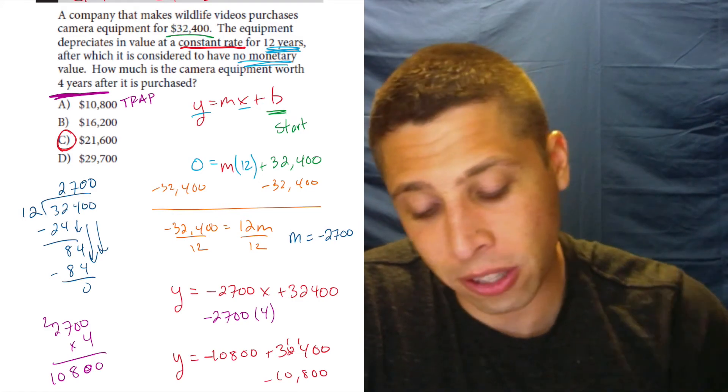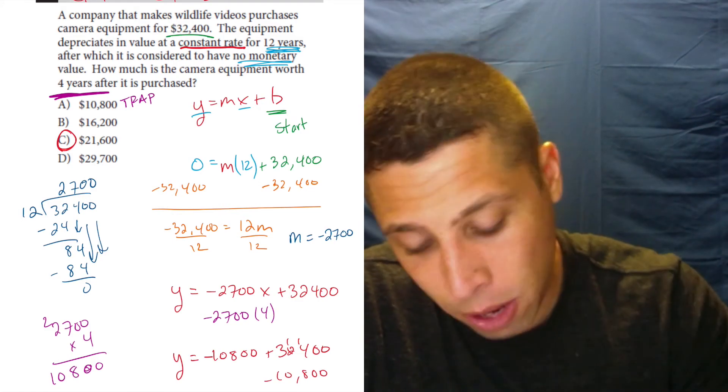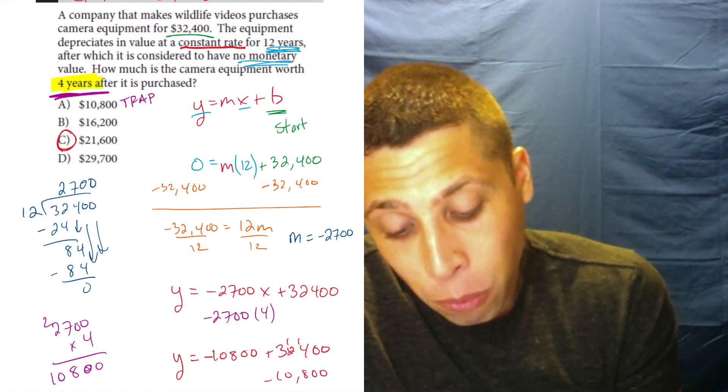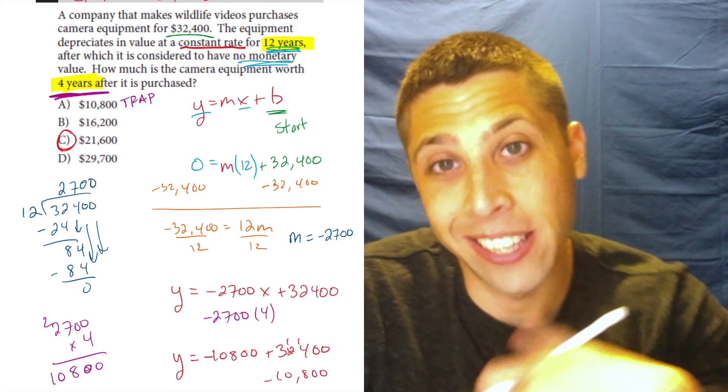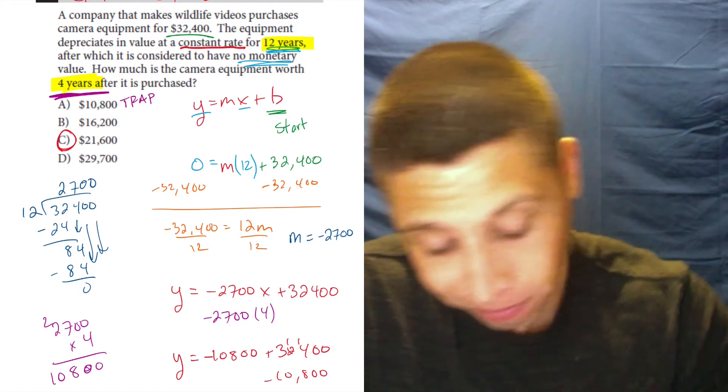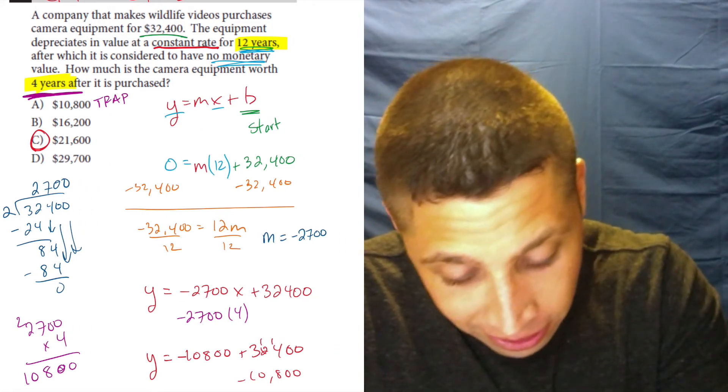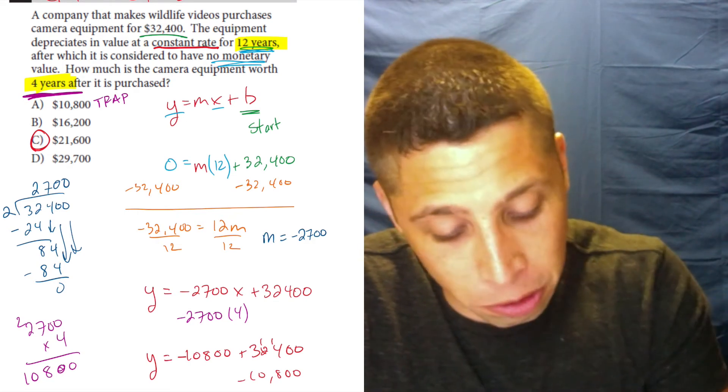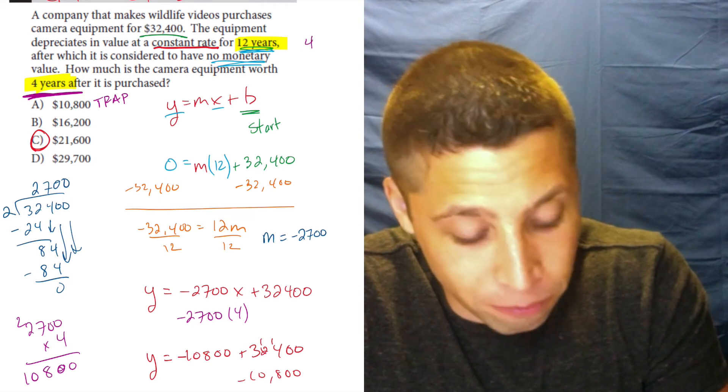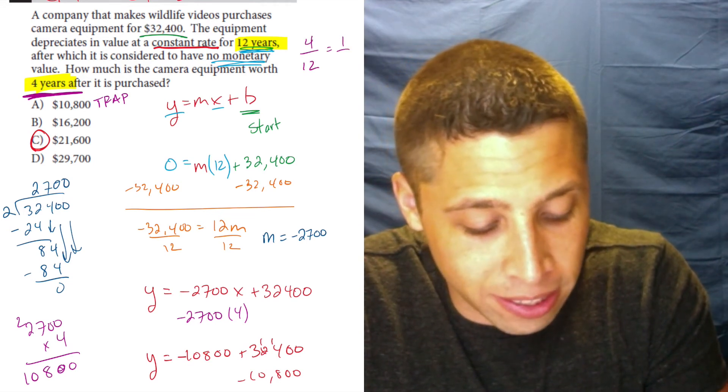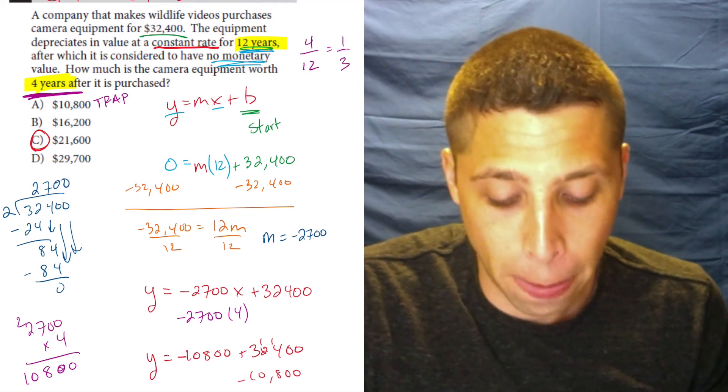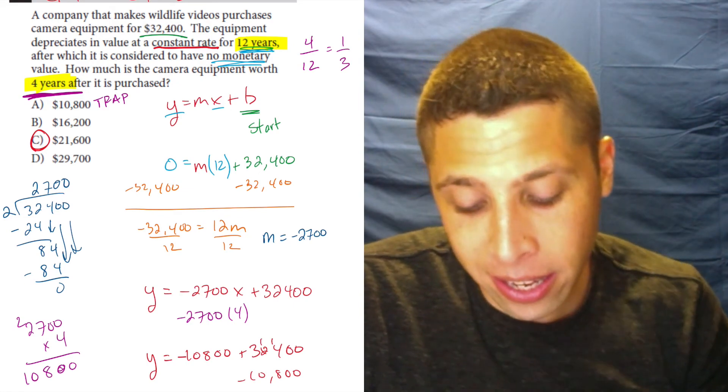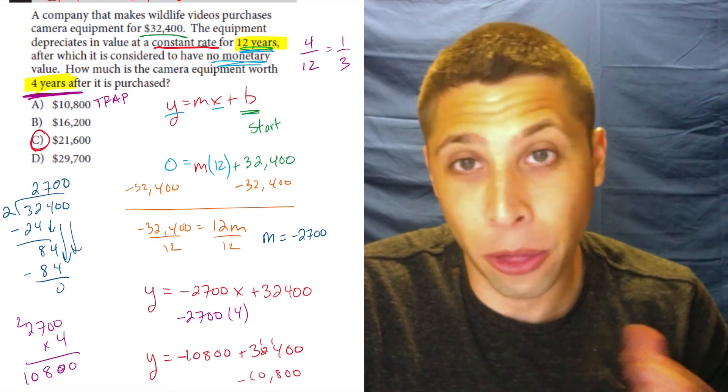Let's talk about, though, the simple way that could save us. Well, the key to the whole question is that four years is a fraction of 12 years. What's the fraction? So four out of 12 is the same as one-third, meaning that since it's a constant rate, in four years it's going to lose a third of its value.